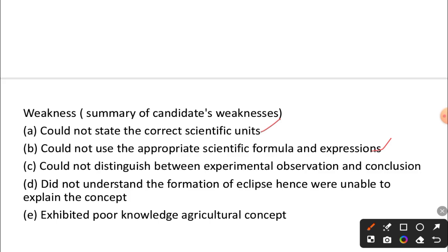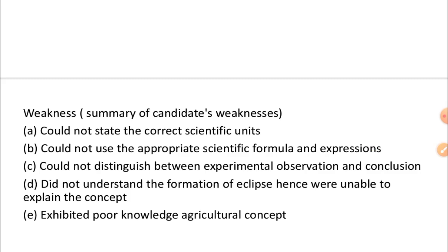Looking at solutions to each weakness: when it comes to the correct use of scientific units, students should go back to basic and derived units and see how formulas are derived and units are obtained. When it comes to formulas, review and apply relevant formulas to the right equations. When a question is given, break it down to identify the values and what each represents — for example, if kilogram appears, you know it represents mass.